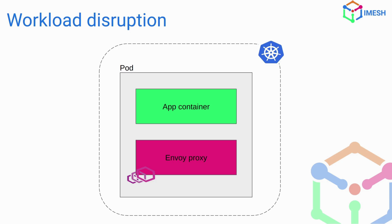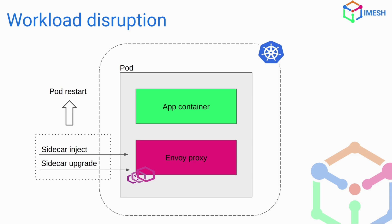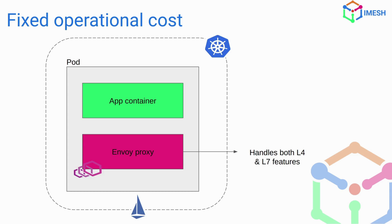Workload disruption is another issue. Since the Envoy proxy is injected inside the pod, when you inject or upgrade the sidecar, the pod restarts. To update to a particular version of Envoy proxy, you need to restart all the pods in the cluster. Additionally, since all L4 and L7 capabilities are handled by Envoy proxies, even if you only want simple L4 and MTLS, you have to take the entire bundle — resulting in a fixed and heavy operational cost.